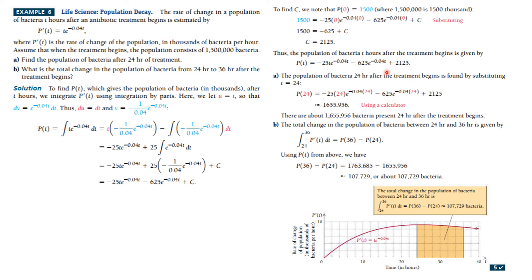This is an initial value problem. For part A, we substitute T = 24 and use a calculator to find how many bacteria are present 24 hours after treatment. For part B, we find the total change in population from 24 to 36 hours by integrating P′(T) from 24 to 36, plugging in the numbers to get the answer, which represents that area.